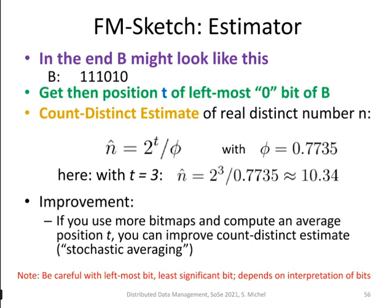And then, as illustrated, we can look at the position of the leftmost 0 bit. We call that position t. And then we get an estimate for the count of the distinct elements as 2 to the t divided by phi, with parameter phi equals 0.7735. In this example here, for this B, we would get an estimate of 10.35.